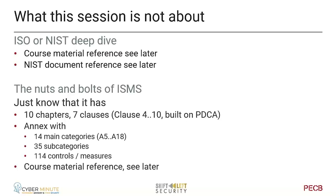It's important to know that ISO 27001 is built up in two big parts. First we have the clauses — the management operations you need to take care of — covered in 10 chapters, with six requiring actual implementation. ISO is very strongly based on the PDCA cycle: Plan, Do, Check, Act — a management cycle of repetition. From an implementation point of view, we have the Annex, also covered in ISO 27002, with 14 main categories from Annex 5 to 18.